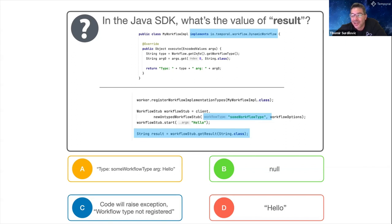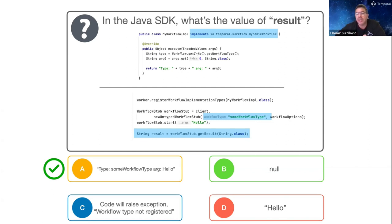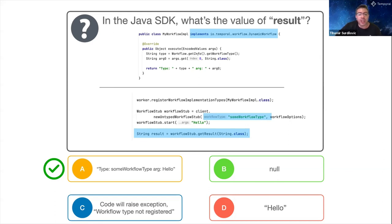If you answered A, congratulations. This involves the dynamic workflow interface - if you register a workflow that implements DynamicWorkflow, it can be invoked for any type not explicitly registered. So even though we're invoking type 'some_workflow_type', our MyWorkflowImplementation gets executed, and you can get the workflow type via workflow.getInfo().getWorkflowType(). You can only have one of these registered per worker.